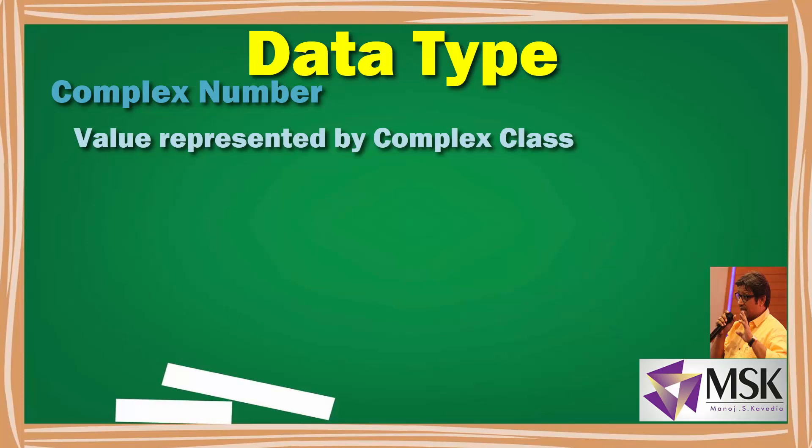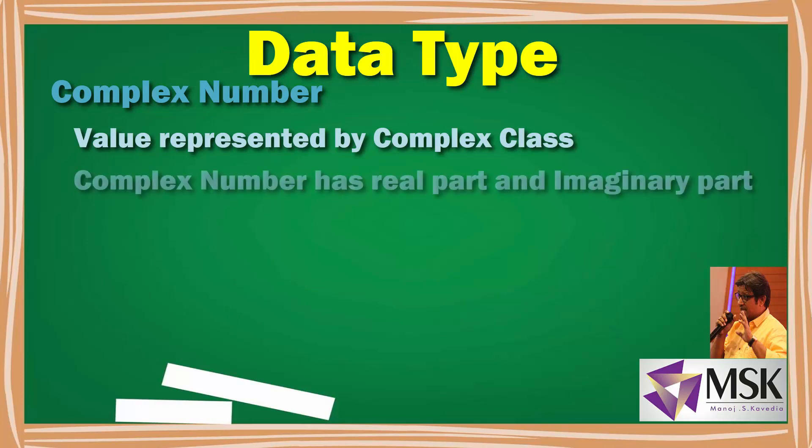The third numeric type is complex numbers, represented by the complex class. A complex number has one real part and one imaginary part. We will see this in the demonstration as well.